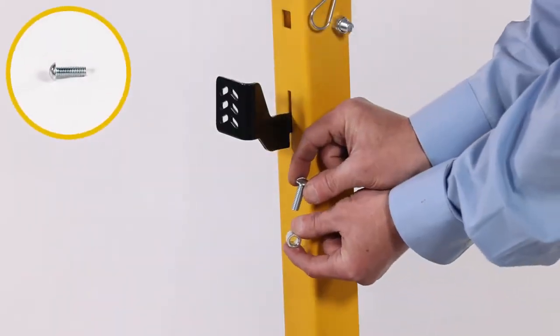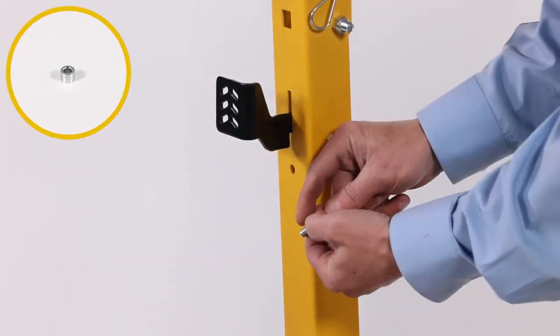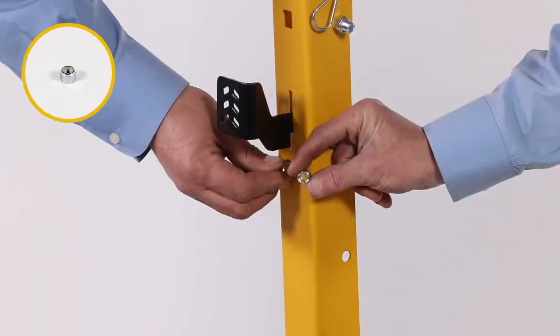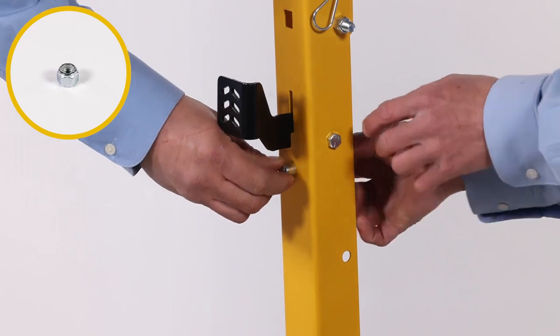Now slide the 5/16 by 1 inch screw, Part AA, through the short spacer, Part BB, and insert it into the tongue. Secure it with a 5/16 inch Nylok hex nut, Part J.